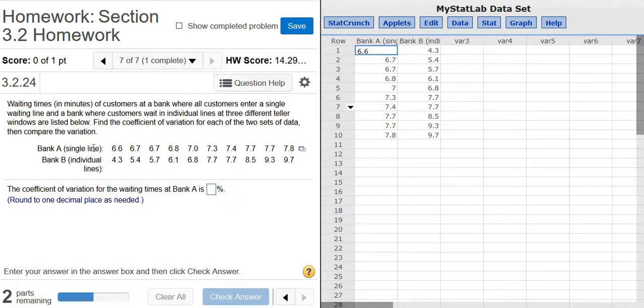In this problem, we're given waiting times at a bank. We have bank A, which has a single line, and bank B, which has individual lines. We want to compare the waiting times at these two banks.